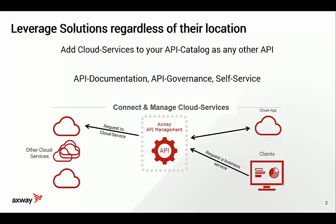When that API is part of your API management system you gain several benefits. You can add documentation that clearly describes to your developers and consumers what the API does. You get your own API management lifecycle, decoupled from the cloud API. You have API governance — meaning you can control which application is allowed to use that API and how often. And your API catalog can be used for self-service, so developers and business departments can explore APIs and request subscriptions on their own.